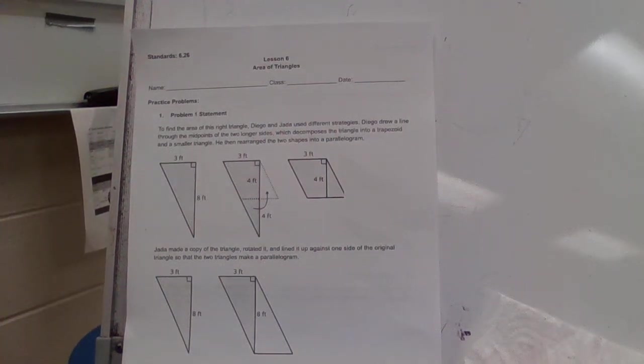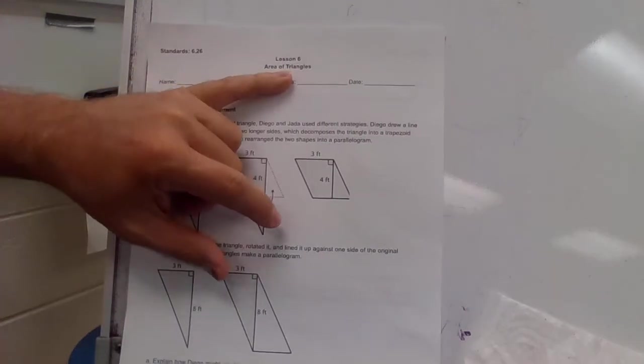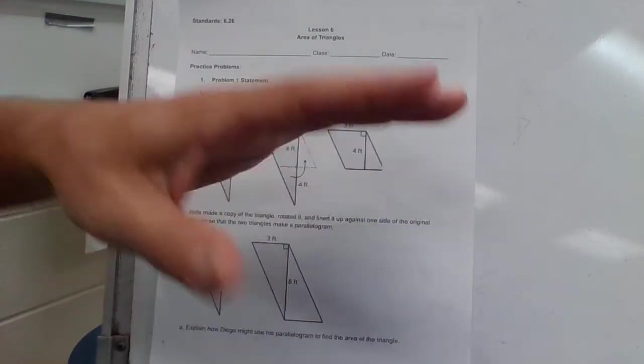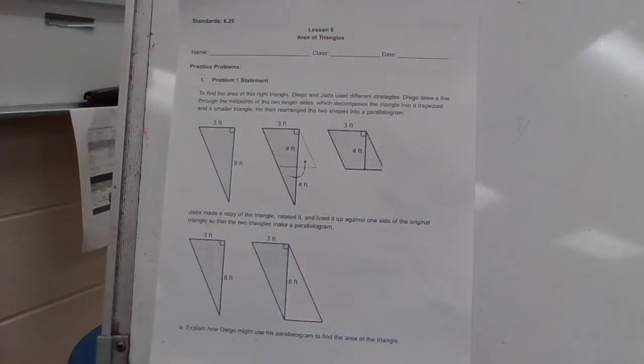Hey guys, today is Tuesday, October 11th. Today we're going over Lesson 6, which is area of triangles. We should know area of triangles already pretty good. We've been working on that for about two weeks now, circles, rectangles, triangles, those kinds of shapes.